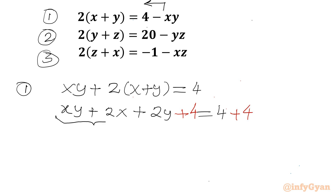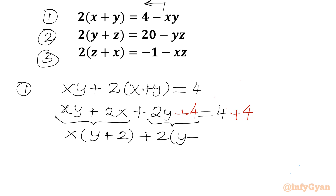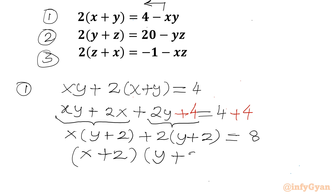From the first two terms I can take x common out, so in the bracket there will be y plus 2. From the other two terms I will take 2 common, so in the bracket it will be again y plus 2. The right hand side becomes 8. So I can write our first equation as (x+2)(y+2) = 8. This I will call equation number 1.